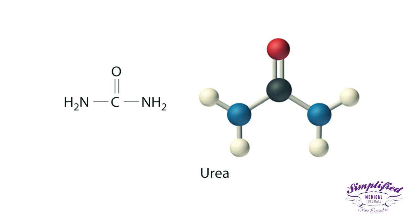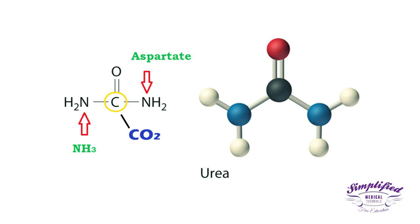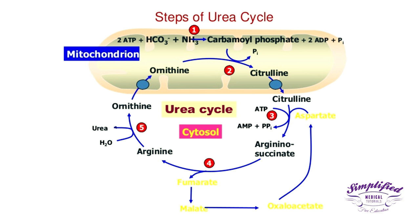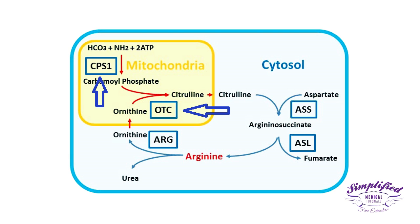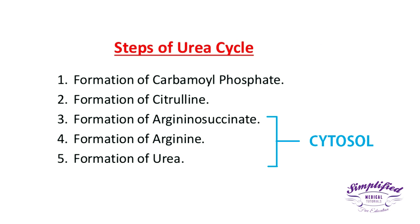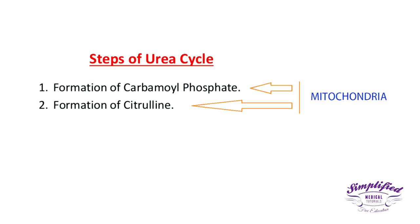If we look at the structure of urea, the two nitrogen atoms are derived from two different sources: one from ammonia and the other directly from aspartate. The carbon part comes from carbon dioxide. Urea synthesis is a five-step cyclic process with five distinct enzymes. The first two reactions occur in the mitochondria because the required enzymes are present there, whereas the remaining cycle takes place in the cytosol.